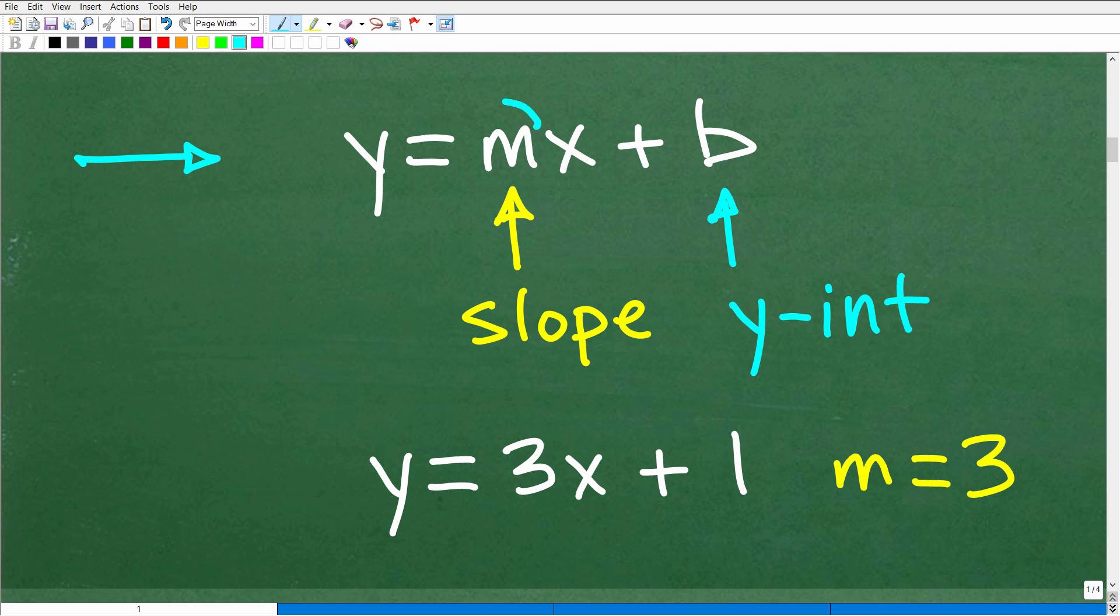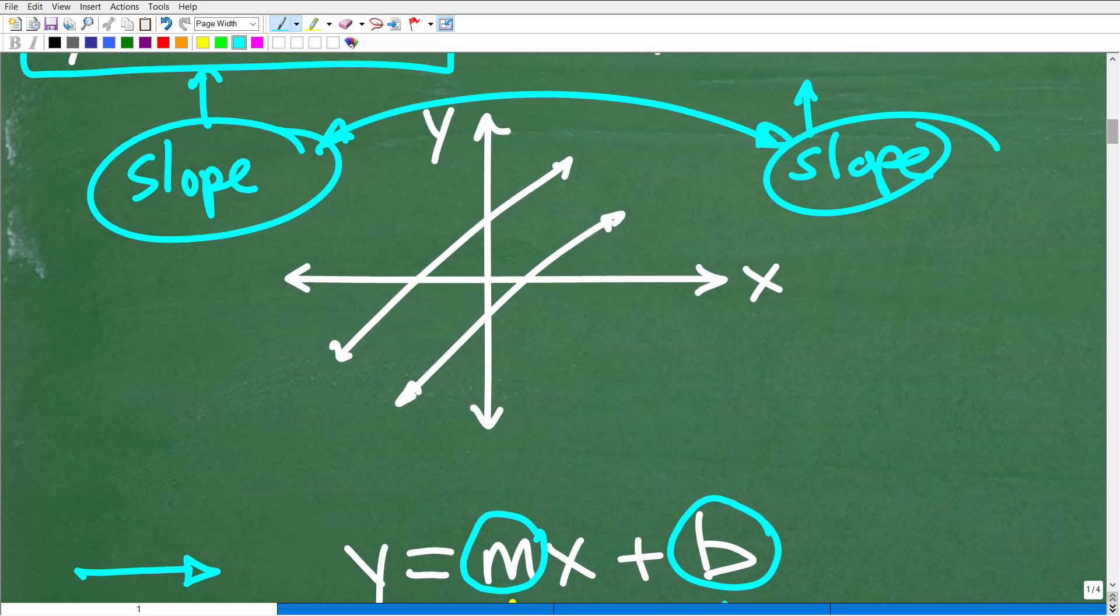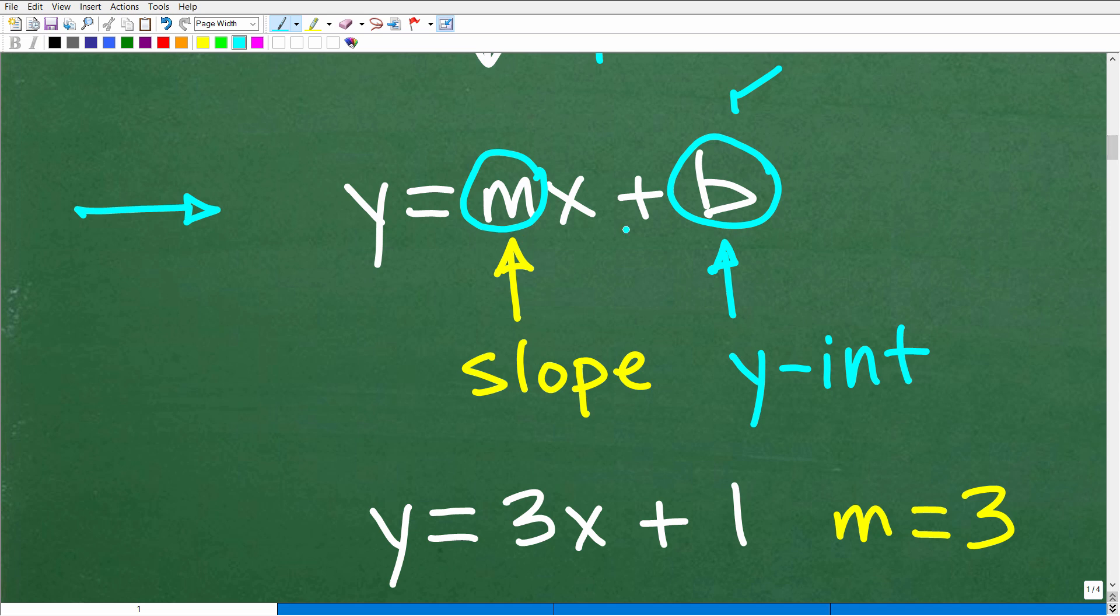So the number in front of the variable x is the slope. This number over here is the y-intercept. So just to be clear, the y-intercept is the point where this line crosses the y-axis. So here we have y equals mx plus b. We're not really interested in b. I just need to know the slope of this line.